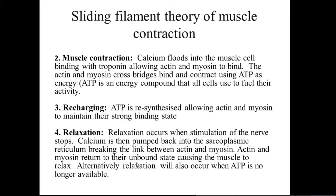There is an interconversion of different types of signals. First, electrical signals are transferred from the nervous system to the neuromuscular junction. These are then converted to chemical signals through stimulation of the sarcoplasmic reticulum. The release of calcium ions then results in muscle contraction, converting the chemical signal into a mechanical signal.